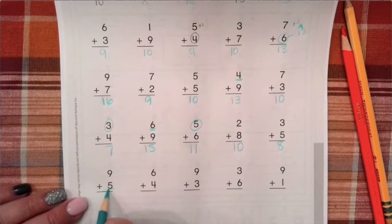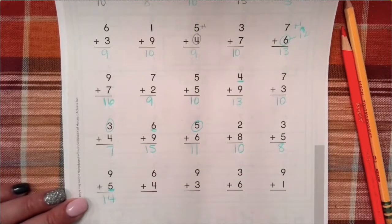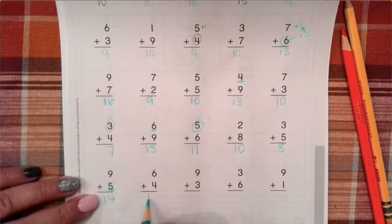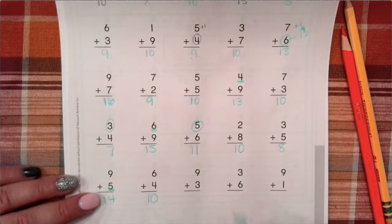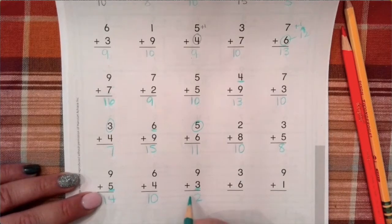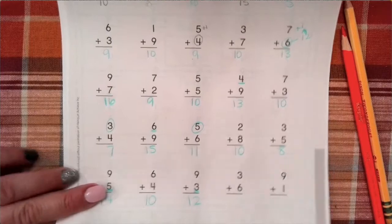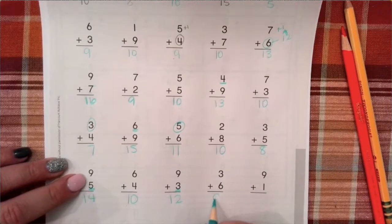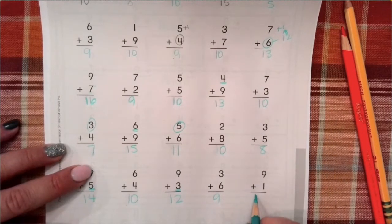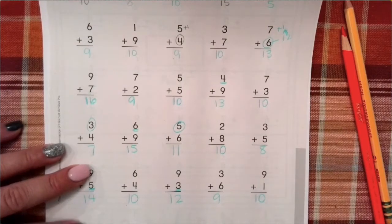Last row. Nine plus five is fourteen. Six plus four is ten. Nine plus three is twelve. Three plus six is nine. And nine plus one equals ten.